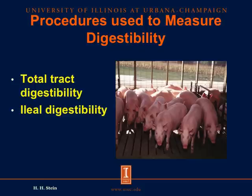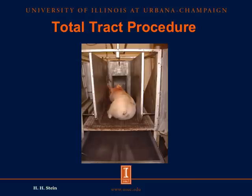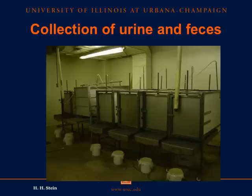Looking at different procedures to measure digestibility of energy and nutrients, we basically work with two procedures. The total tract digestibility procedure involves placing a pig in a metabolism cage, which allows us to collect all fecal material excreted from the pig using a screen under the slatted floor. We also have a urine pan under the screen to collect all urine excreted. Knowing what the pig eats and what it excretes in the feces allows us to calculate total tract digestibility values.